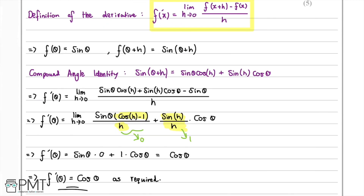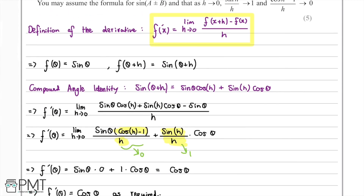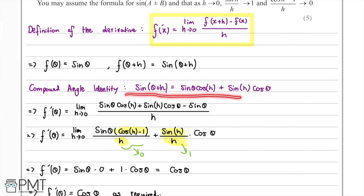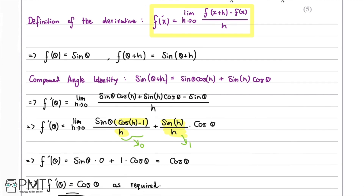This question was worth five marks. The first mark is for stating the definition of the derivative. The second mark is for using the compound angle identity to expand sine(θ + h). The third mark is for performing the expansion and getting it into a single fraction. The fourth mark is for identifying and factoring out the common factors. The fifth mark is for correctly applying the limits to arrive at f'(θ) = cos θ.